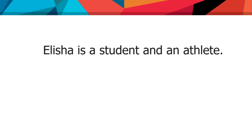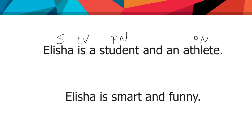Just as with most other sentence elements, predicate nouns and adjectives can certainly be compound. 'Elisha is a student and an athlete' — predicate noun and predicate noun. You could also say 'Elisha is smart and funny' — compound predicate adjective. Okay, let's look at your worktext and see if we can identify sentence patterns with linking verbs. As always, please do this along with me — that's the only way you're going to know if you really understand the concept.